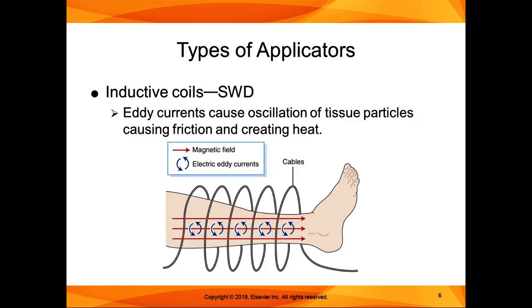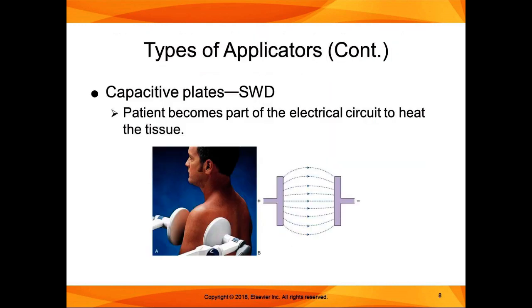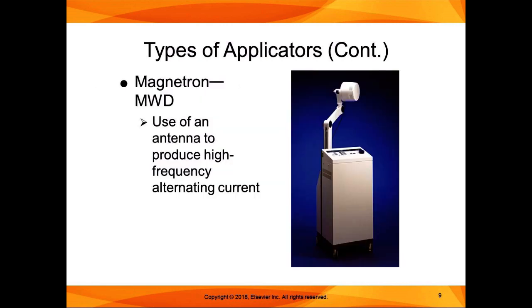There are different types of applicators. Shortwave diathermy uses inductive coils, largely used for extremities, with an apparatus that wraps around an arm or a leg. Because you're heating through the tissues, there has to be some way to surround the tissue. There are also inductive coil applicators that are only on one side. Capacitive plate diathermy places a plate on either side of the patient, who becomes part of the electrical circuit. The microwave diathermy applicator is called a magnetron and uses an antenna to produce a high-frequency alternating current.